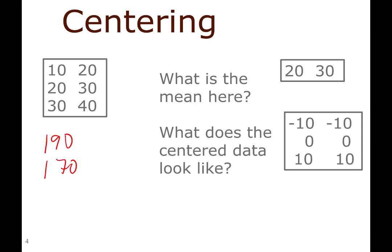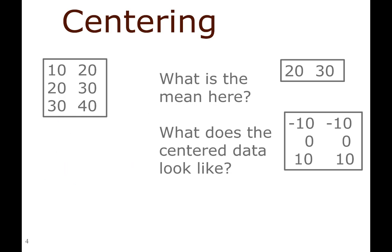Let me make an example: say I have measurements of height in centimeters with an average of 180. The centered data would be the deviation from that average. When you center data, you change the meaning — the original variable was height, but what you really have now is the difference in height. So for example, if you do a PCA and get a negative score value, that doesn't mean you have a negative height — it means your height is below the average.